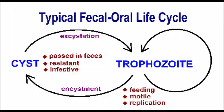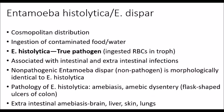This next diagram demonstrates the trophozoite — how it encysts, becomes a cyst, is passed in the feces, and then excysts. That's what you typically see with the intestinal amoeba we're talking about today.